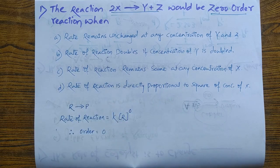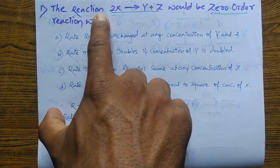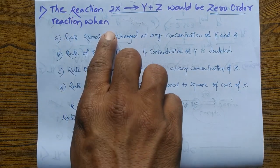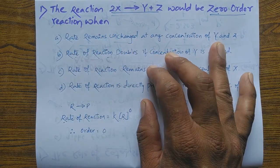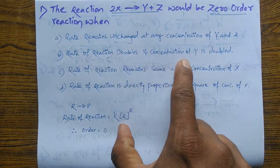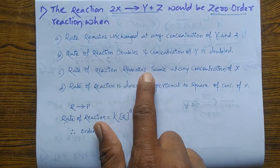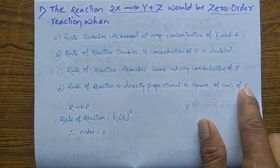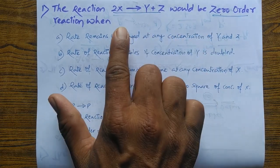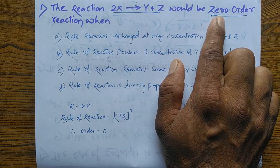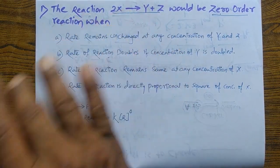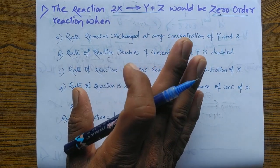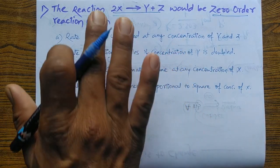The first question: the reaction 2X gives rise to Y plus Z. Which would be a zero order reaction? Option: rate remains unchanged at any concentration of Y and Z. Rate of reaction doubles if the concentration of Y is doubled. Rate of reaction remains the same at any concentration of X. Rate of reaction is directly proportional to the square of concentration of X.